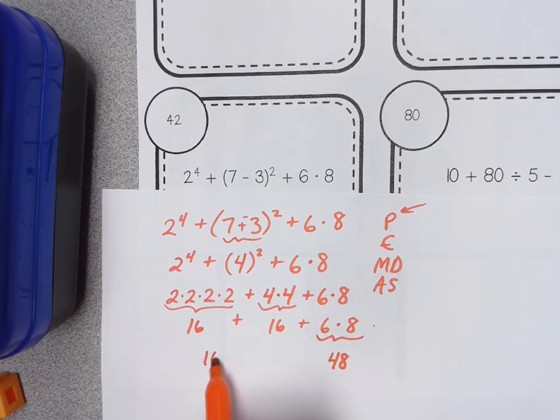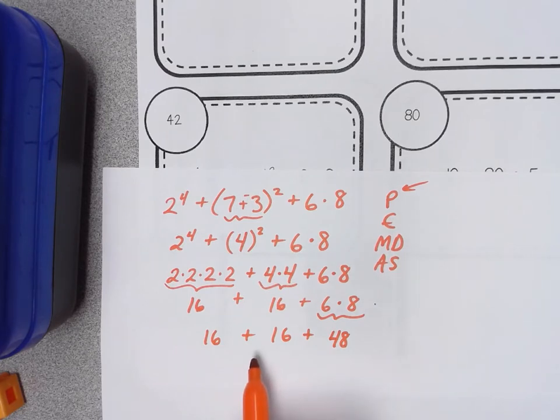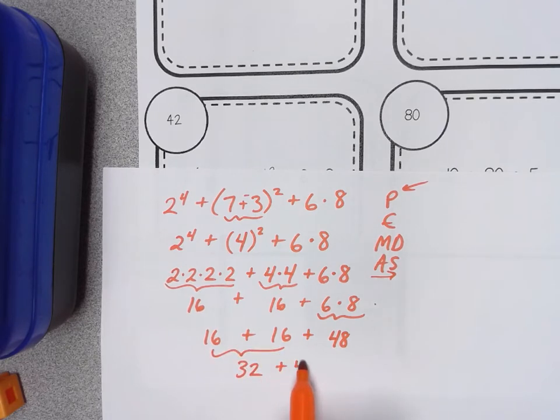I need to bring down everything else that's happening because again I really want to show one step at a time. It helps with my communication in math and I only have addition left so it says I can move in order from left to right. Well 16 plus 16 that's 32. And I'll bring down the plus 48.